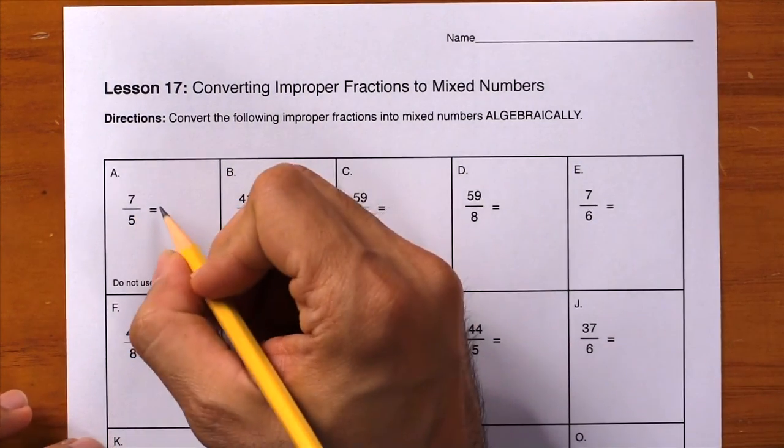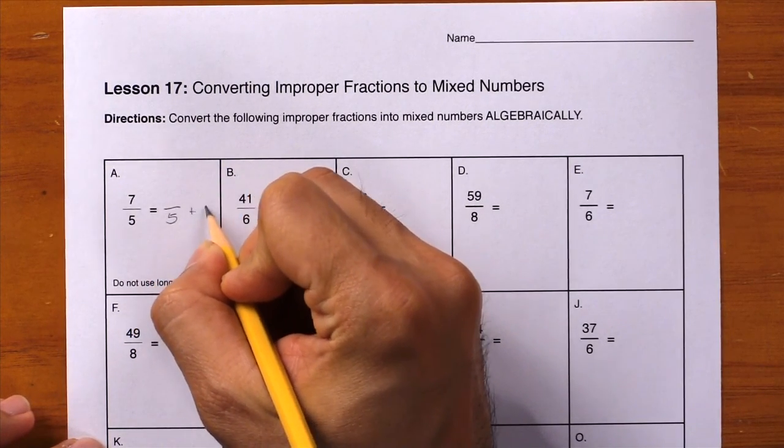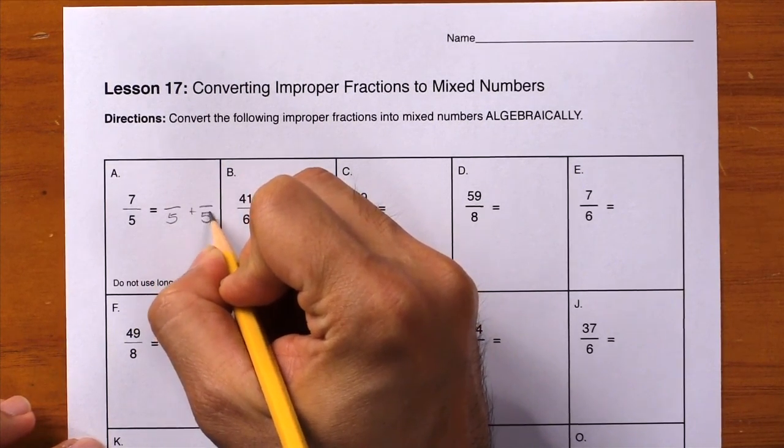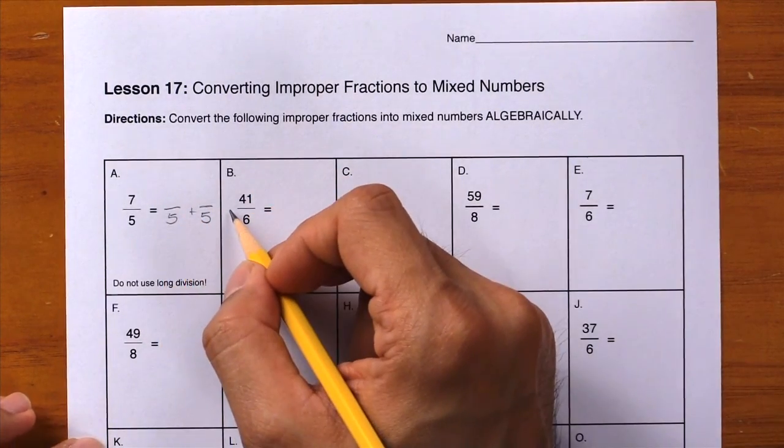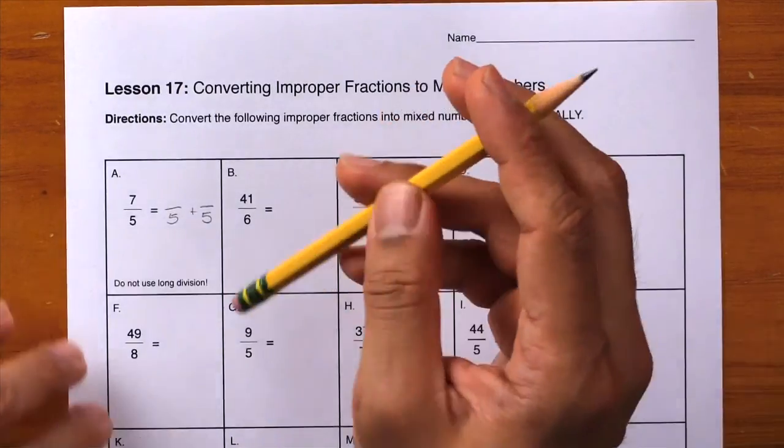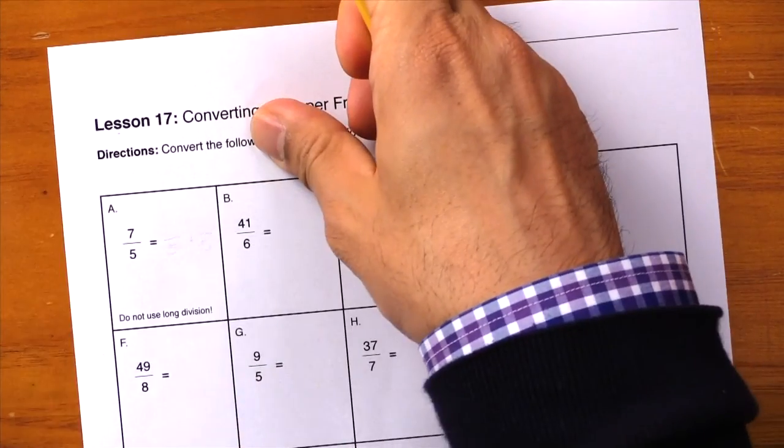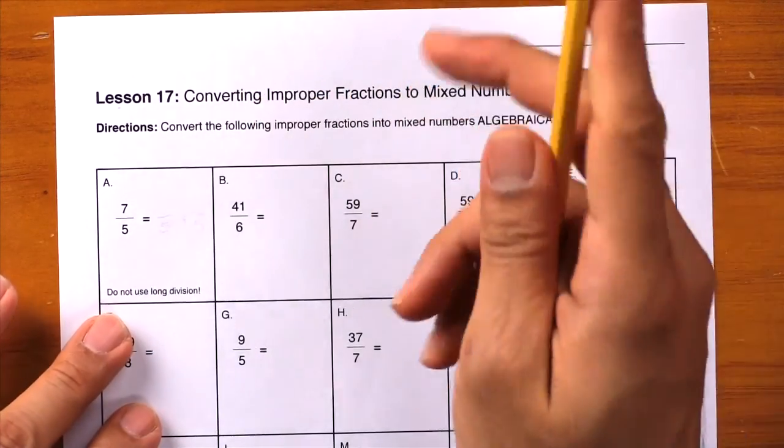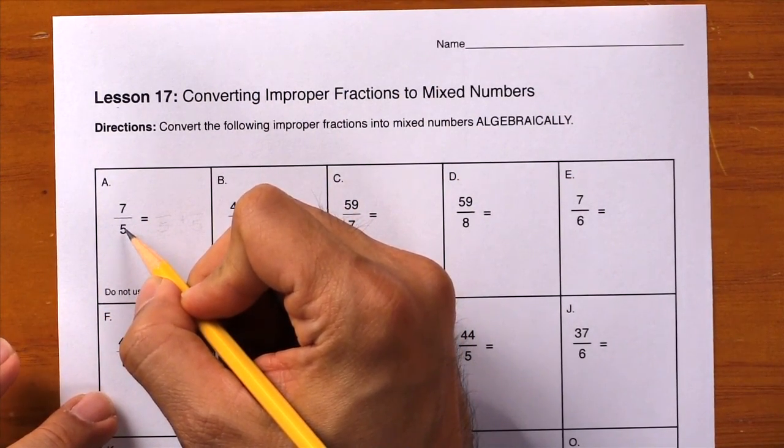The procedure we've been using is to rewrite this as blank over 5 plus blank over 5. Students may be able to see this and do this in their heads, so let's go ahead and try that. Instead of writing it down, just ask yourself this: can you do 7 divided by 5 evenly? The answer is no.